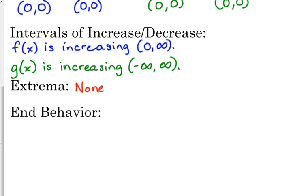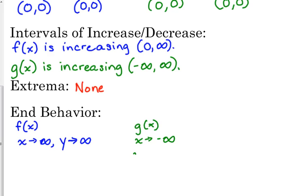When we talk about end behavior for f(x), the square root function, we can't talk about x approaching negative infinity because it's not defined there. So all we can say is: as x approaches positive infinity, the y values also approach positive infinity because they're increasing. For g(x), the cube root, it is defined for all real numbers. As x approaches negative infinity, the y values approach negative infinity, and as x approaches positive infinity, the y values approach positive infinity.